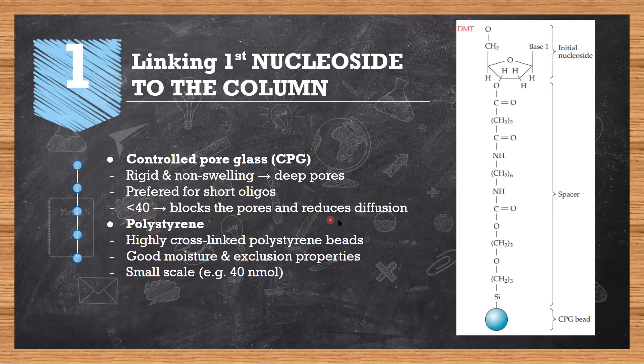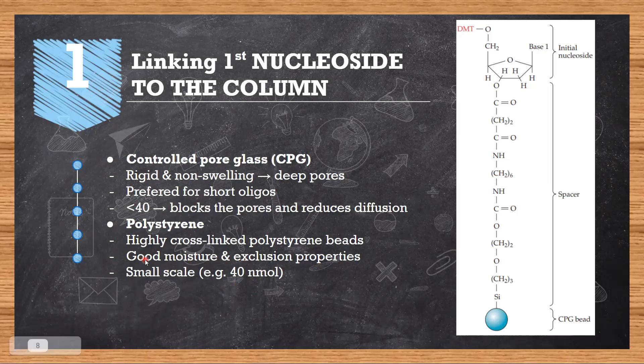Polystyrene is a highly cross-linked structure that has good moisture retaining and exclusion properties, but the drawback is you can use it only on a small scale. This is our CPG bead. This is the first nucleotide.